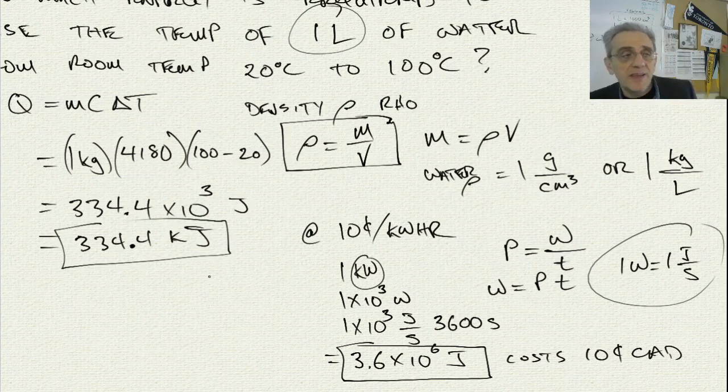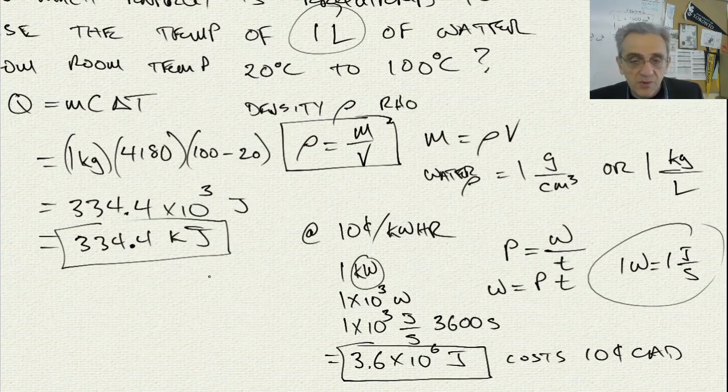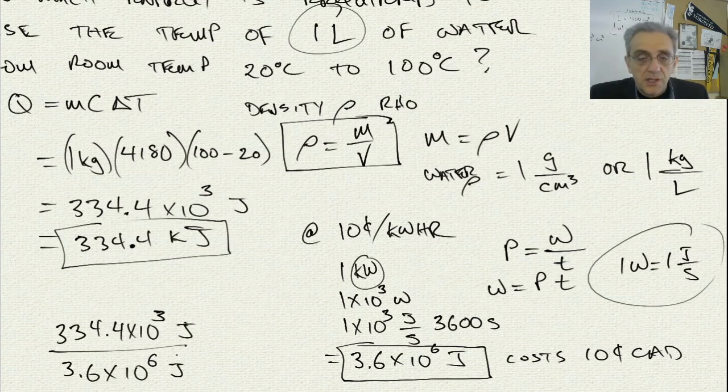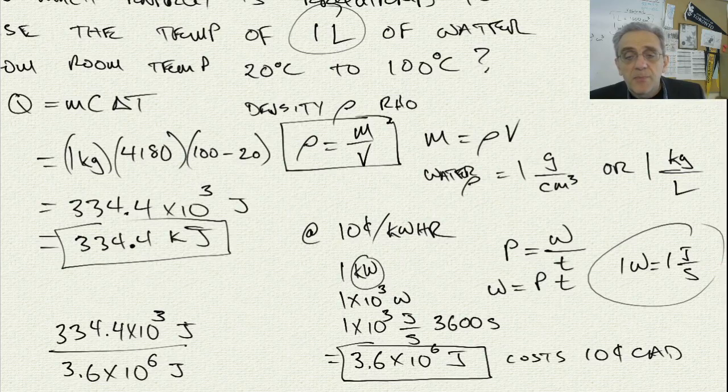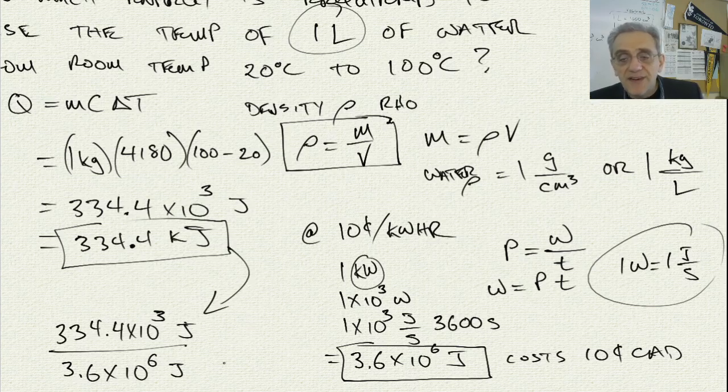Therefore, how much does this cost? Like for example, if you're making some tea and you put on a liter of water to boil, how much money did it cost to make that tea? One liter of water is a pretty average amount of water to boil on your stove. So therefore we would say, to figure this out, we would simply go 334.4 times 10 to the power of 3, that's the kilojoules amount I got from there, and we would divide that by the cost of 1 kilowatt hour.